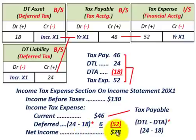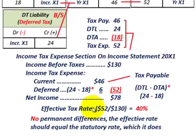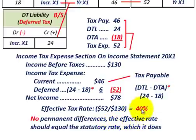Subtracting income tax expense of $52,000 from income before taxes of $130,000 gives net income of $78,000 for the period. We can also check the effective tax rate: $52,000 ÷ $130,000 = 40%, which equals the statutory tax rate of 40% set by the government.